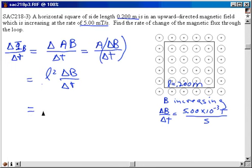Now go ahead and substitute values with units. There it is. There's L squared. And then the rate of change of B is 5.00 times 10 to the minus 3 tesla per second.